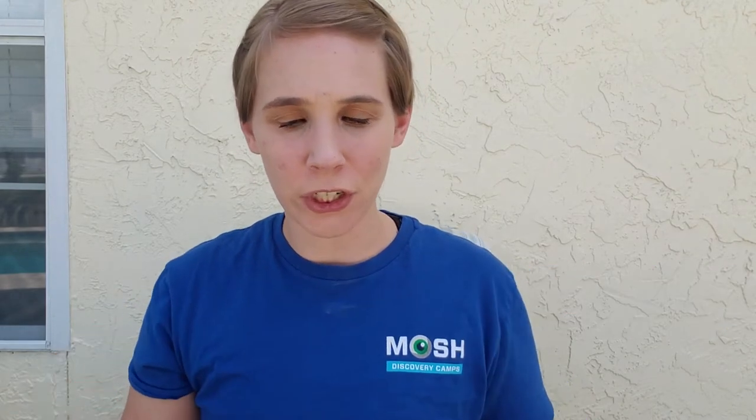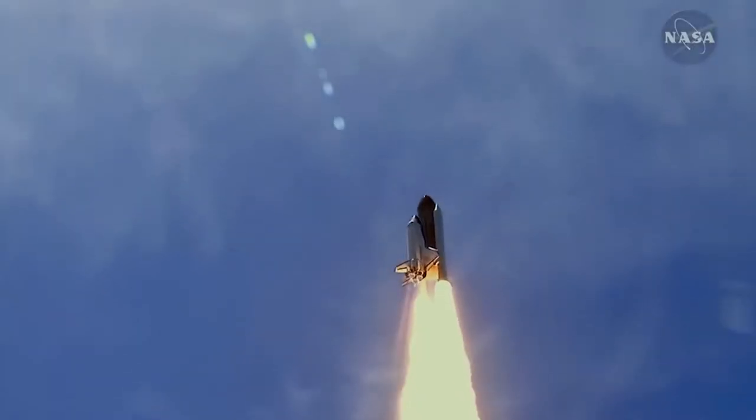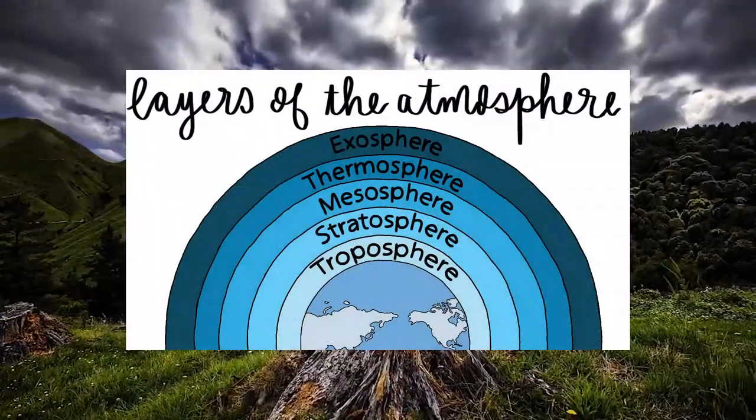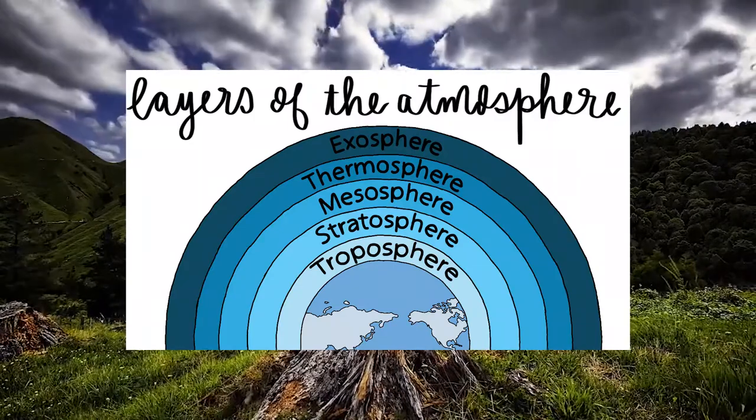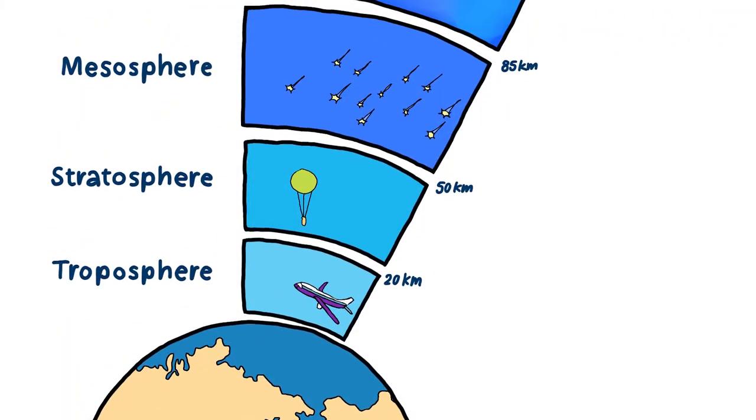The atmosphere is a blanket of gases that encompasses the Earth. You may hear people talk about breaking through the atmosphere. This atmosphere is actually made up of several layers, and you can imagine these layers sort of like the parts of a bed.